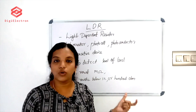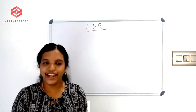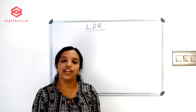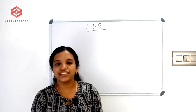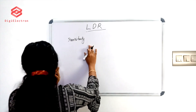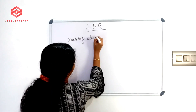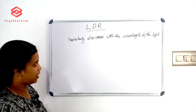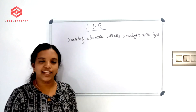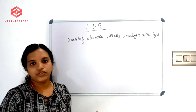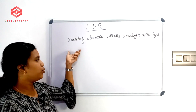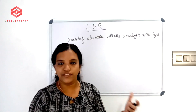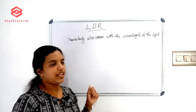In dark conditions, resistance will be high. LDR is a light-sensitive device. Sensitivity also varies with the wavelength of light. The intensity of light and the level of resistance will change.